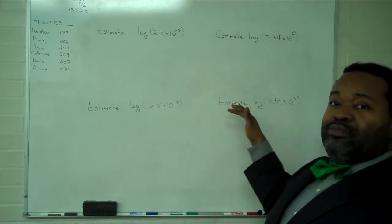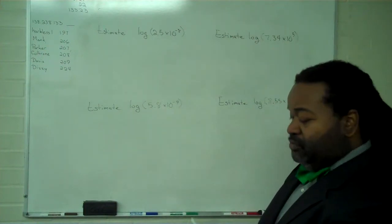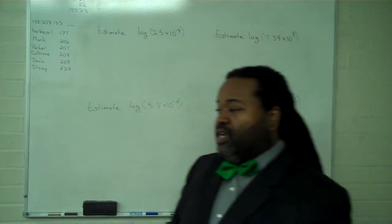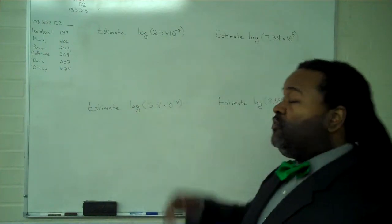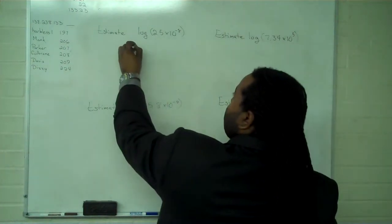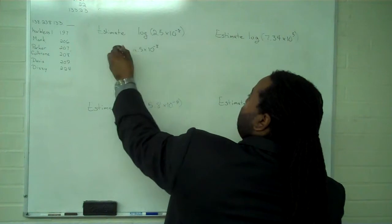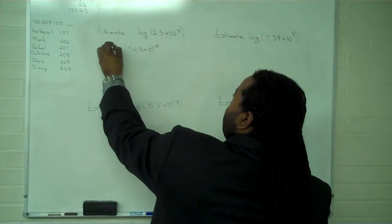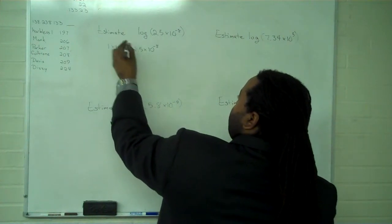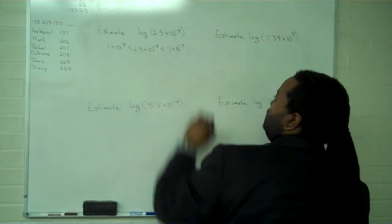We have four examples here, and if we consider the first one, estimating the log of 2.5 times 10 to the negative 8, the first thing we want to do is figure out two values that we can sandwich this between. If we take 2.5 times 10 to the minus 8, what we know to be below it is 1 times 10 to the minus 8, and directly above it, 1 times 10 to the minus 7.